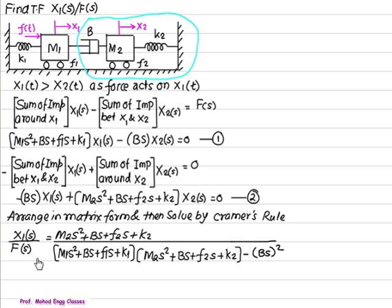You will get final answer as X1s upon F of S, M2s square, Bs plus F2s plus K2, divided by this term, multiplied by this term, minus of this into this whole square.